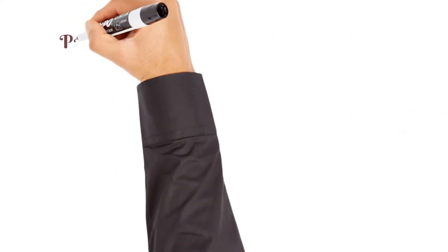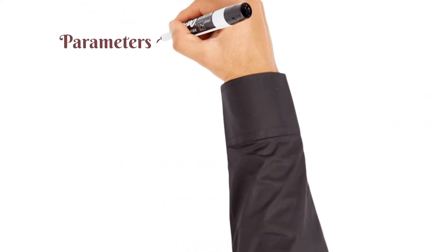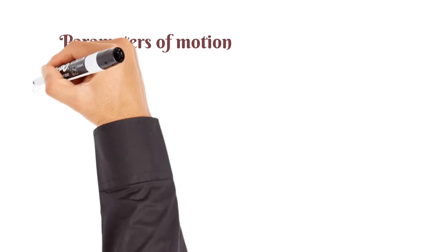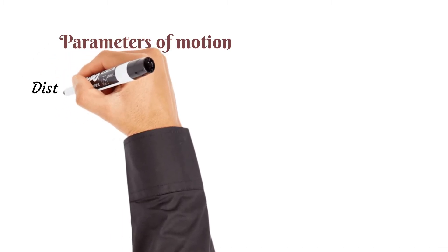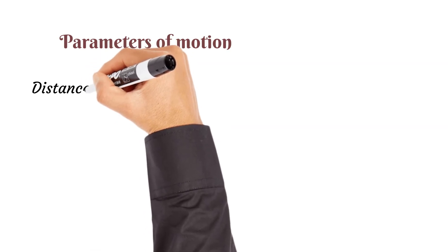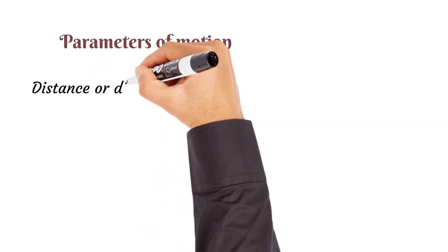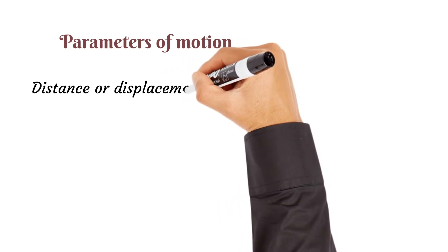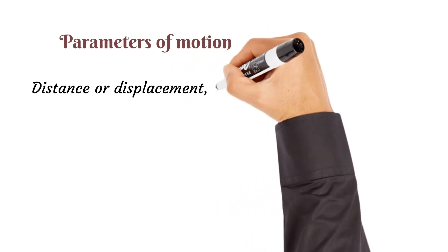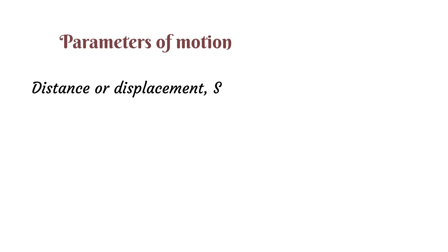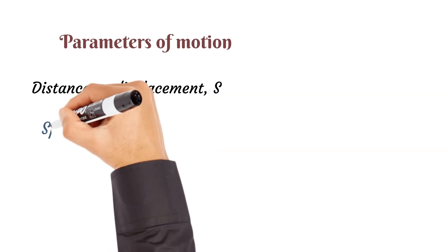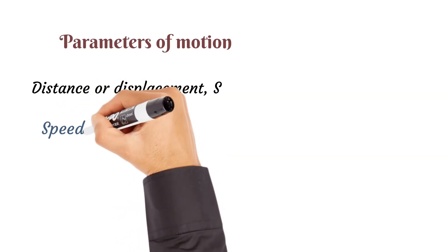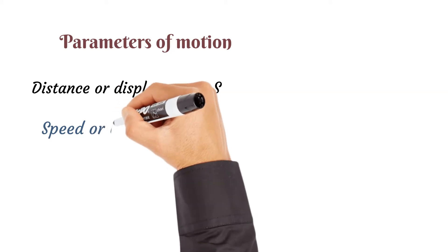Next we look at the parameters of motion, what we need to define motion. First, we need distance or displacement. Distance is a scalar quantity, displacement is a vector quantity. Both are denoted by the letter s. Distance is the space between two points. Displacement is distance traveled in a specific direction.